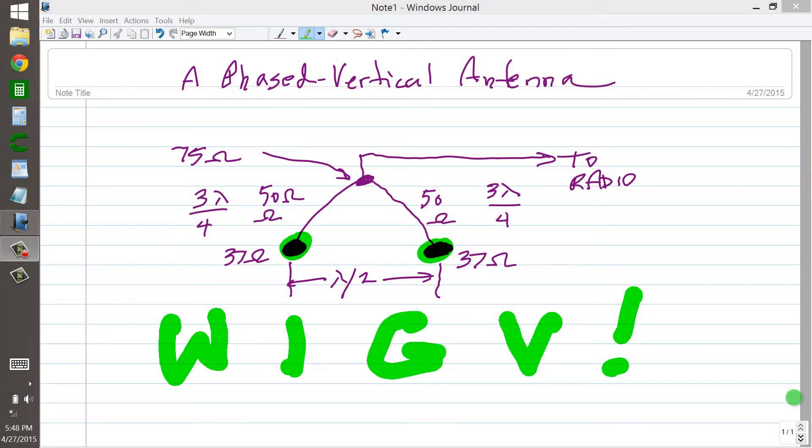Stan Jibilisko here, proprietor and operator of amateur radio station W1GV-Whiskey-1. Good vibrations! At your service to describe a phased vertical antenna system, just one example of how you can phase vertical antennas and get a little bit of directionality and gain.